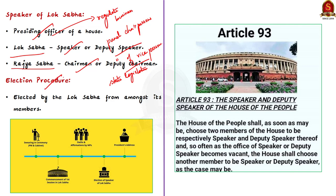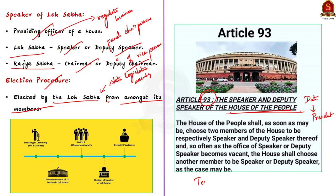The Speaker is elected by Lok Sabha or the State Legislative Assembly from among its members, as per Article 93 of the Indian Constitution for Lok Sabha. The date of election of Speaker is fixed by the President. Usually the Speaker remains in office during the life of Lok Sabha, but whenever the office of Speaker falls vacant, the Lok Sabha elects another member to fill the vacancy.